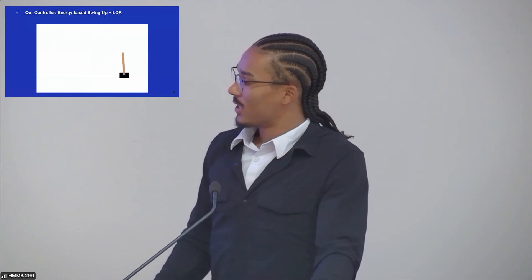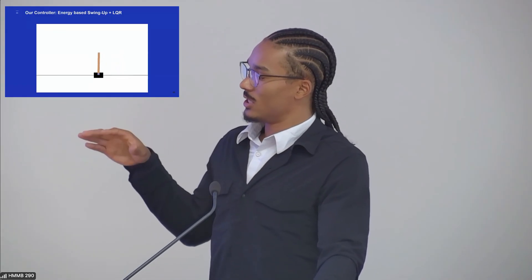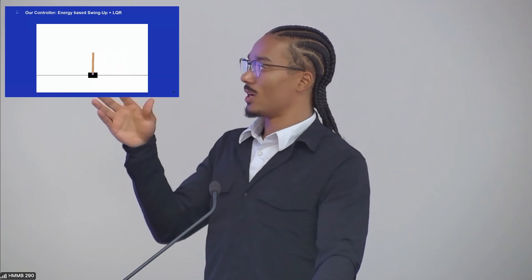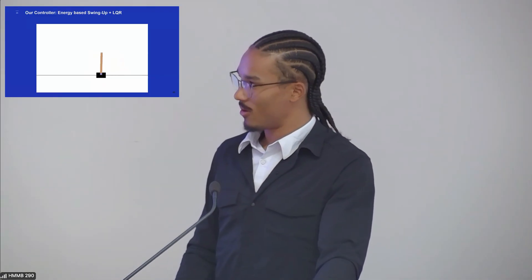So this is our controller in action. As you see, there's a large swing-up value energy injection that causes the pendulum to swing up to equilibrium. And then LQR takes over and keeps it there. And we have a PD term that keeps the cart stabilized around X equals zero.